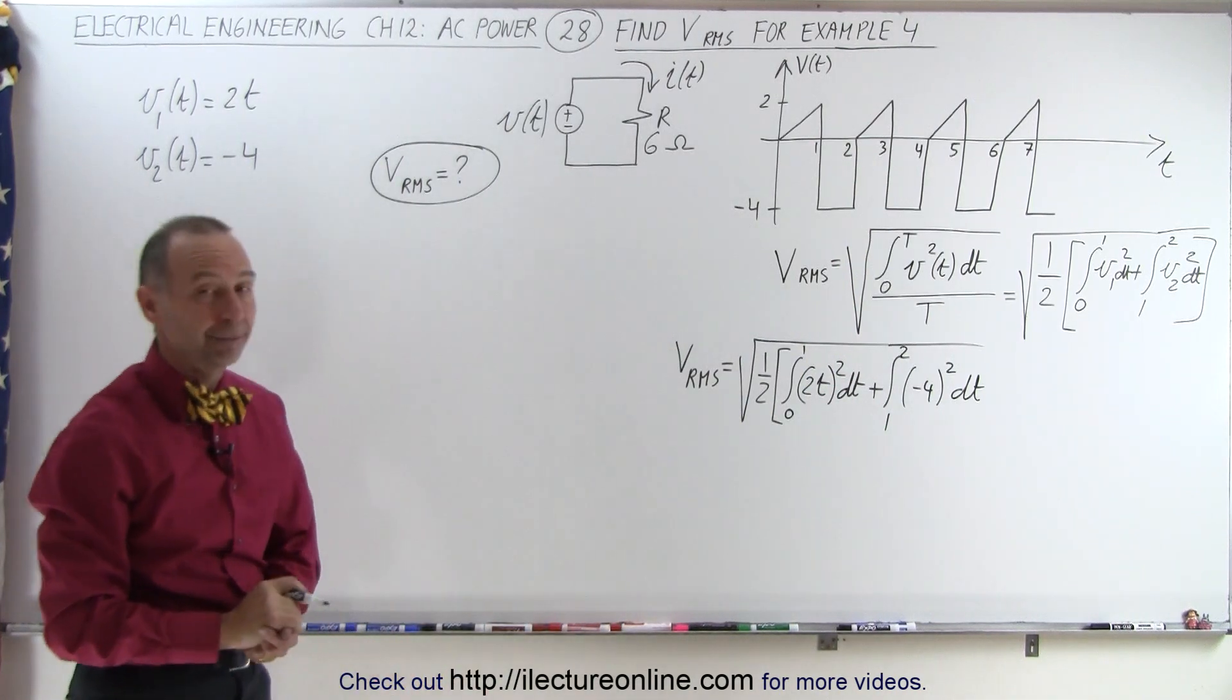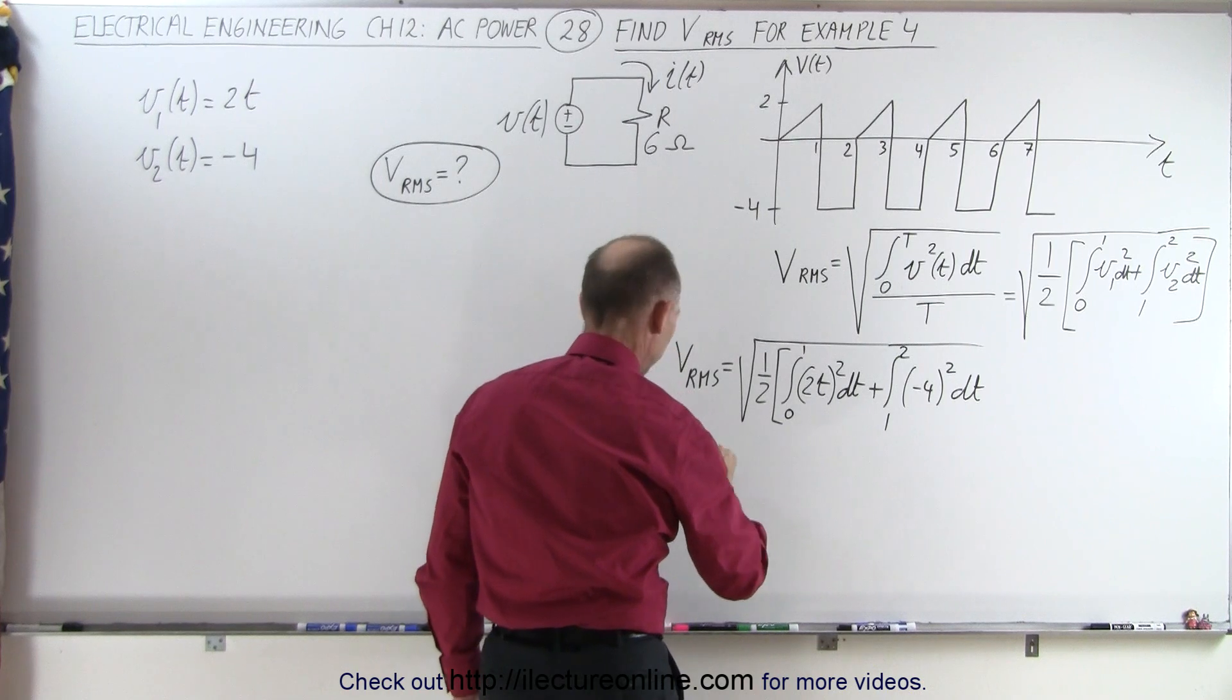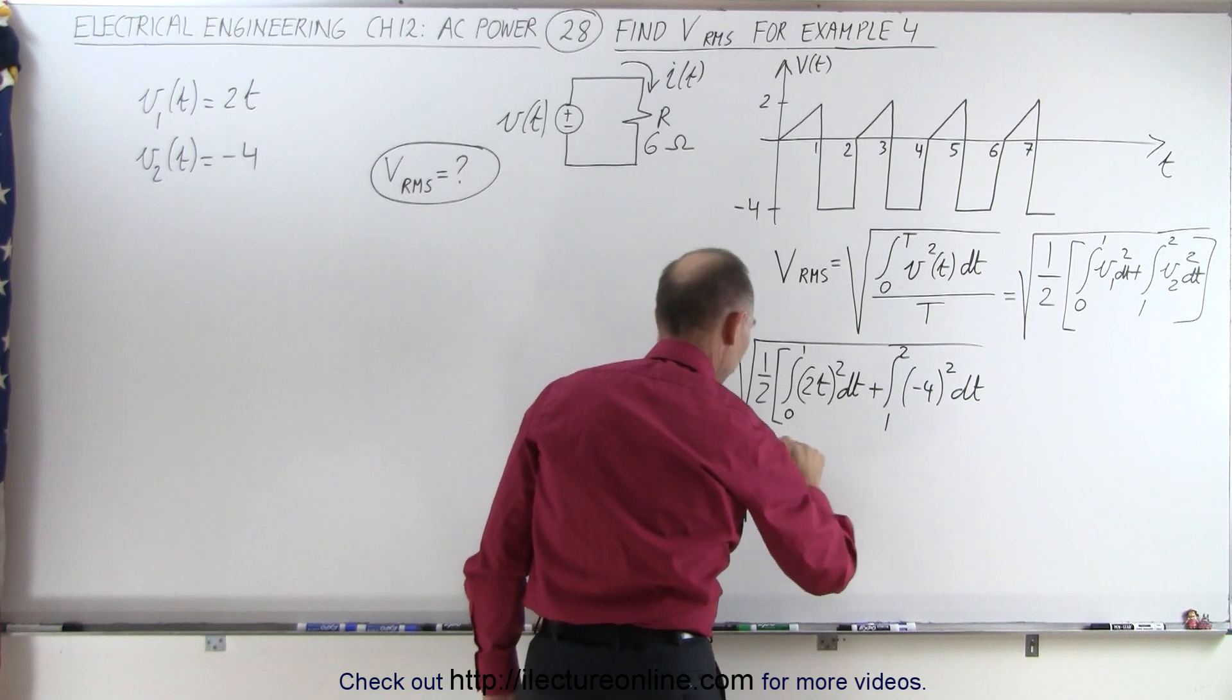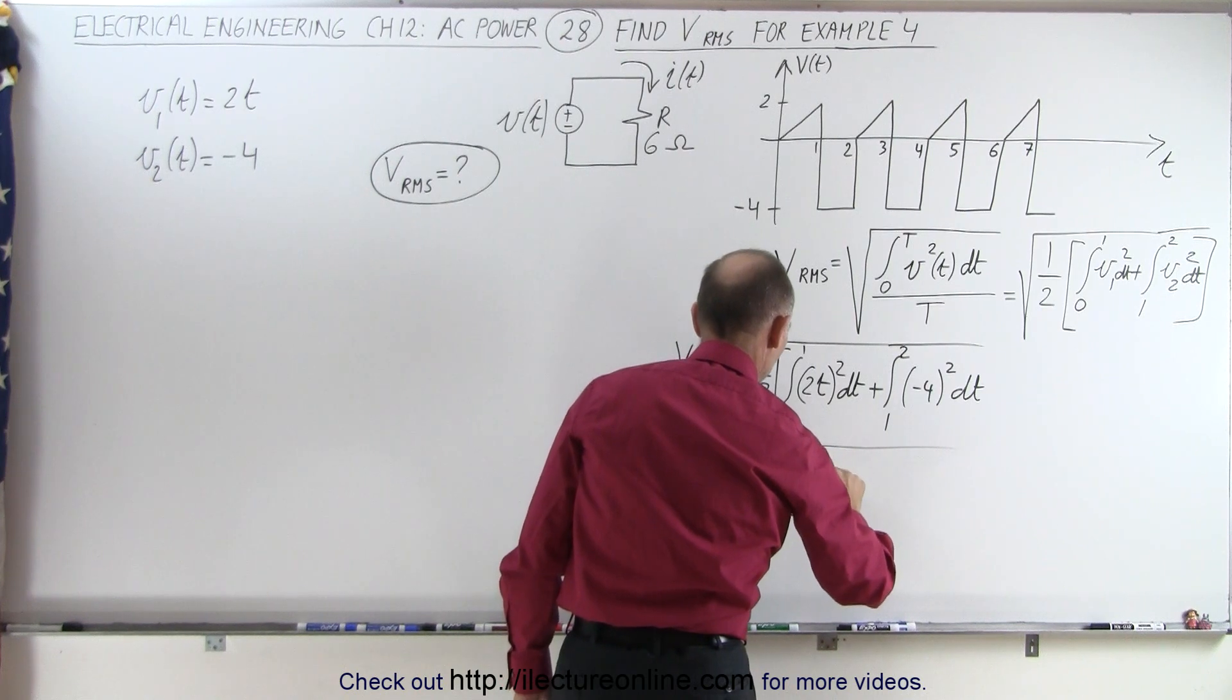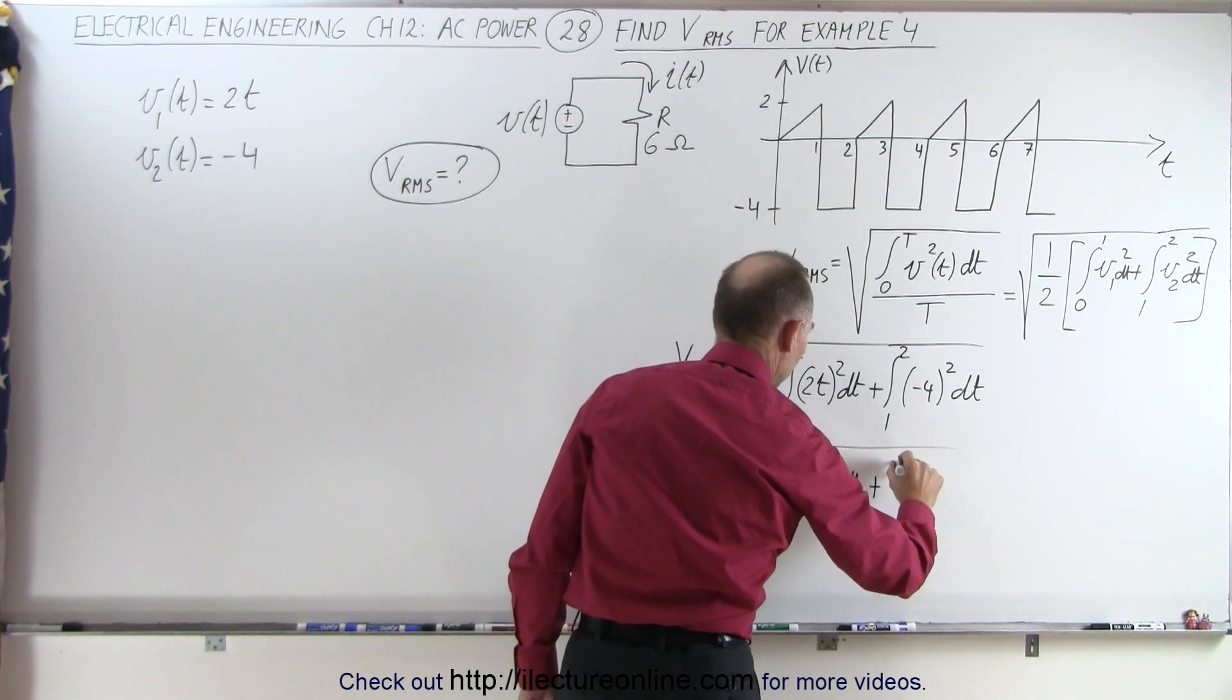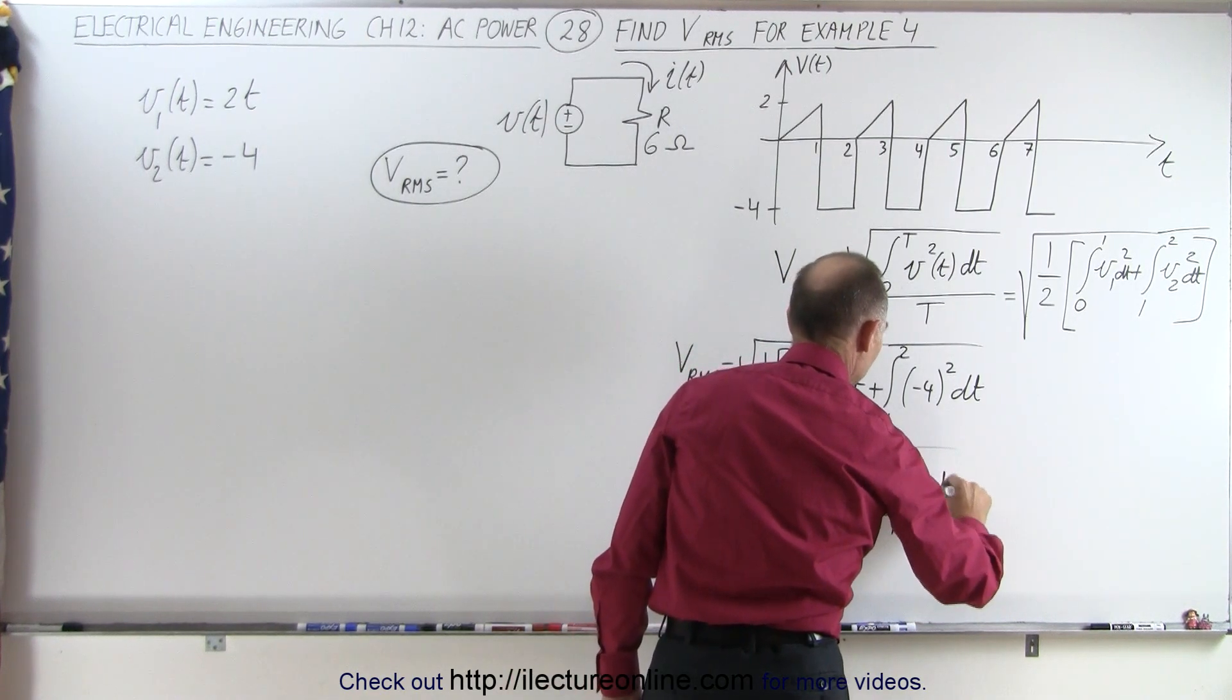All right, that's better. Now let's go ahead and do the integral, or maybe I should write this out first. VRMS, it's always better to avoid mistakes by cleaning this up a little bit first. So we have 1 half times the integral from 0 to 1 of 4T squared DT plus the integral from 1 to 2 of 16 times DT.